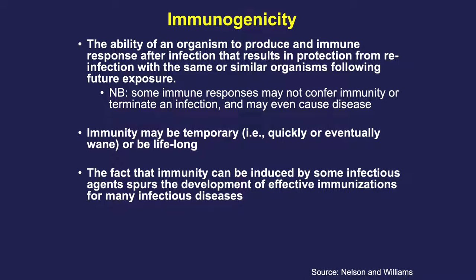Another important characteristic of infectious diseases is immunity, or the degree to which an infection results in immunity — called immunogenicity. Immunogenicity is defined as the ability of an organism to produce an immune response after infection that results in protection from subsequent reinfection with the same or similar organisms. Immunity may be temporary or lifelong, and the fact that some infections induce long-term immunity is what spurs the development of vaccines. Whether SARS-CoV-2 confers immunity is a very open question, as many people now have antibodies but we don't yet know if those antibodies confer short- or long-term immunity.